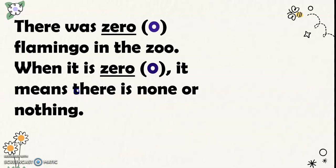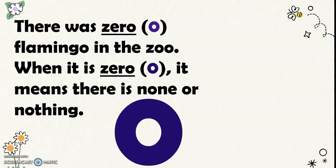There was 0 flamingo in the zoo. When it is 0, it means there is none or nothing. So, 0 flamingo in the zoo. We write 0 this way, and this is the number symbol for 0.